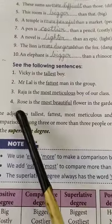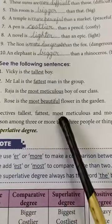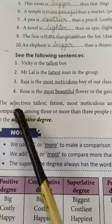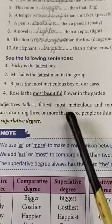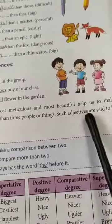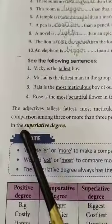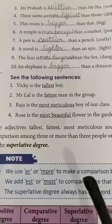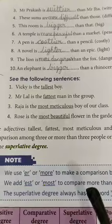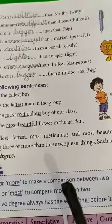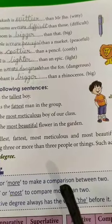The adjectives tallest, fattest, most meticulous, and most beautiful help us to make comparison among 3 or more than 3 people or things. Such adjectives are said to be in the superlative degree. So tallest, fattest, most meticulous, and most beautiful are all used in superlative degree.